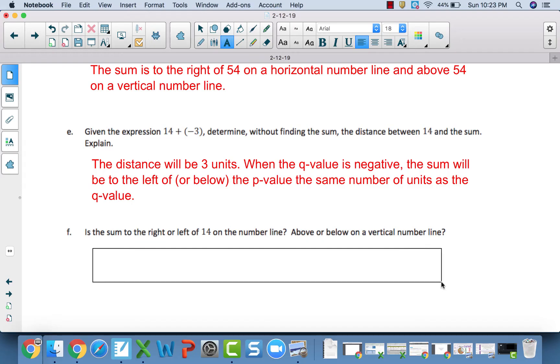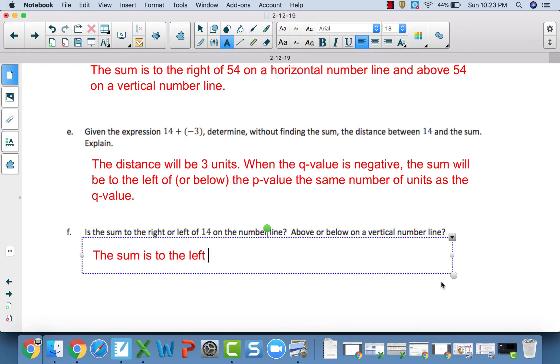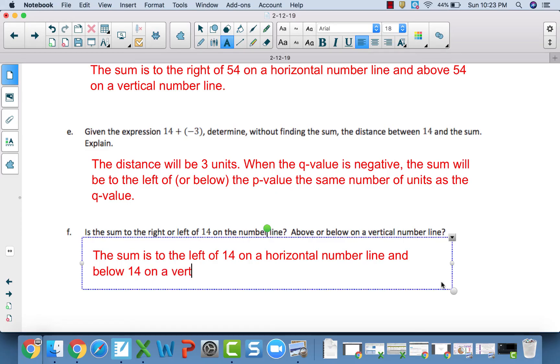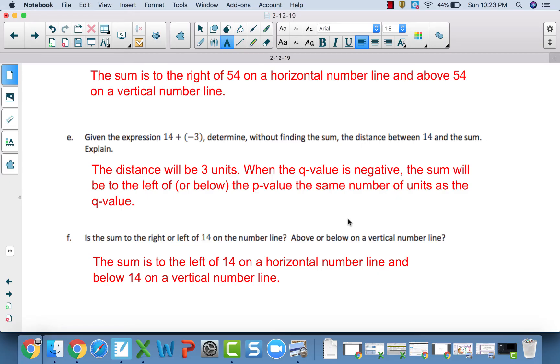Now, F, the sum is to the left of 14 on a horizontal number line and below 14 on a vertical number line. So, basically, this is the main idea here. Whatever your first number is, if you're adding a negative, your answer, your sum, is going to be to the left or below that first P value. If you are adding and the second number is positive, your sum will be to the right or above that initial P value.